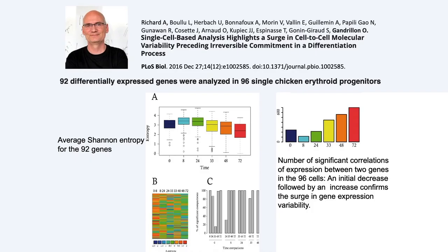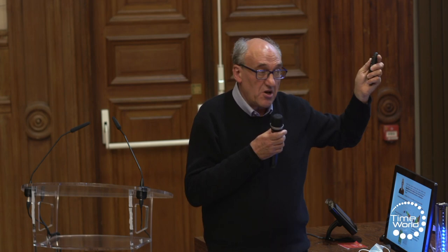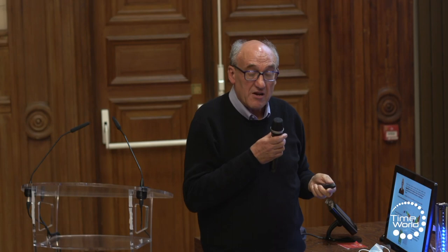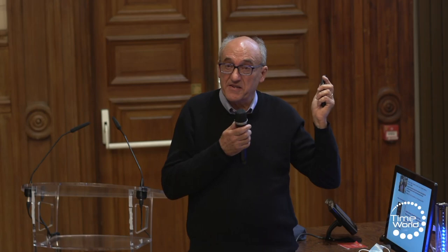This curve is perfectly reproducible and the differences between time points are statistically significant. Moreover, this result was confirmed by the analysis of the number of significant correlations in expression between two genes at the different time points after cells were triggered. As expected, eight hours after cells were triggered, we observed a decrease in the number of significant correlations followed by an increase, thus confirming the initial surge in the variability in gene expression. The same peak in gene expression variability was observed in another cell line — in human blood cells — by Andras Paldi and his team.